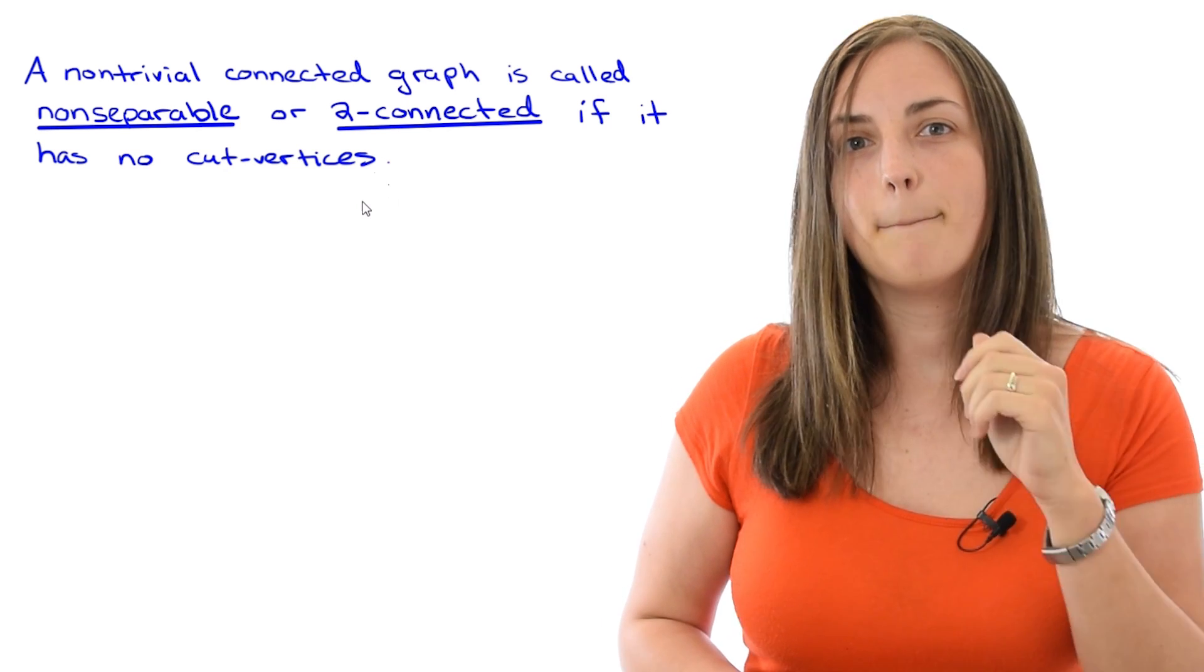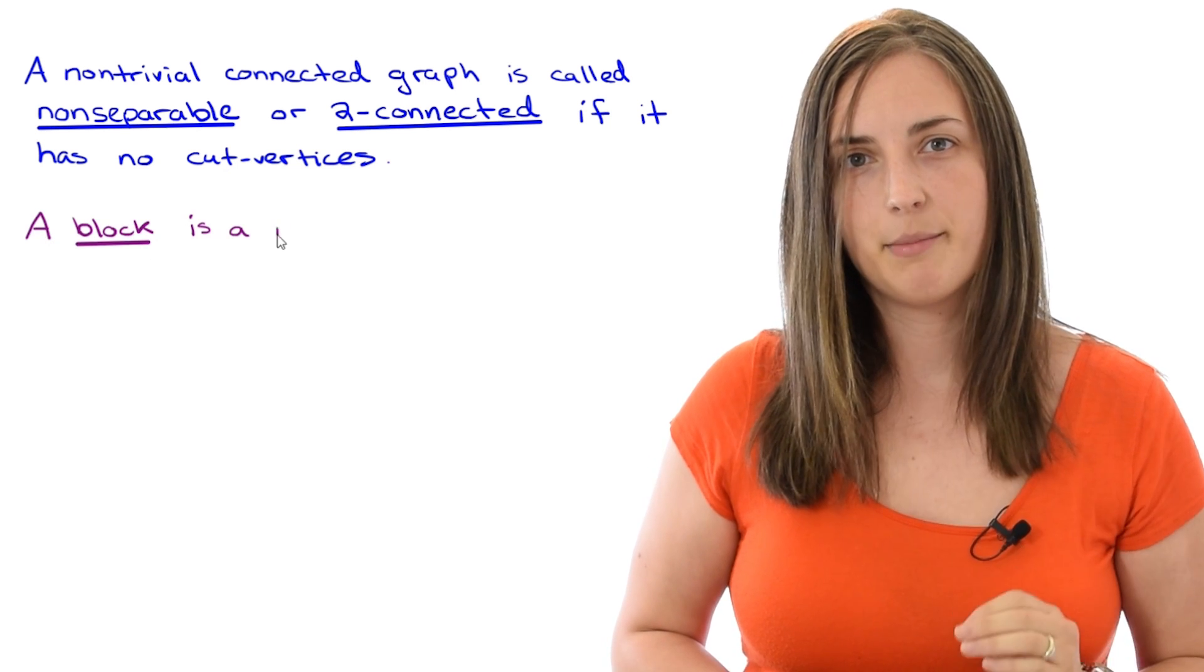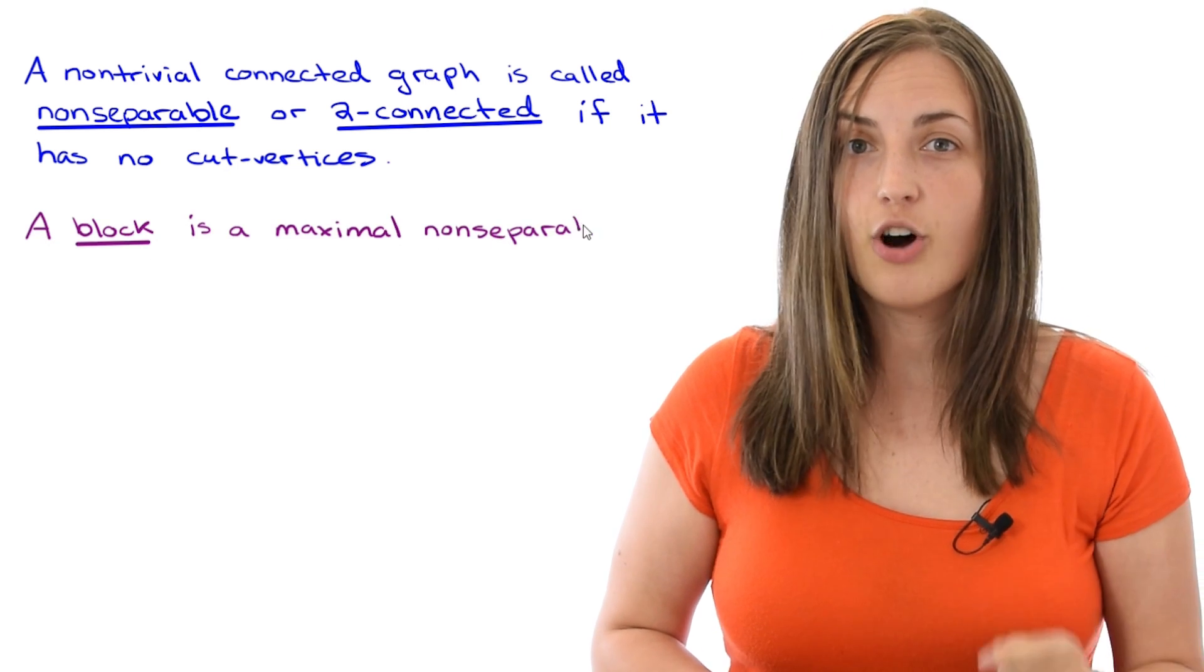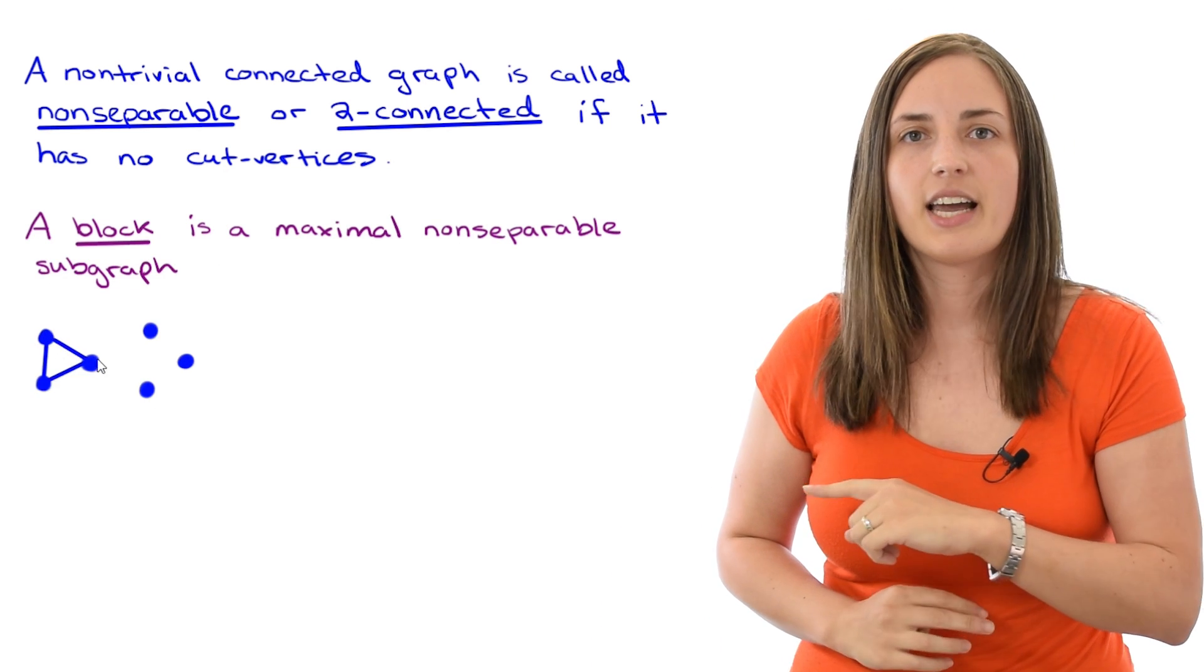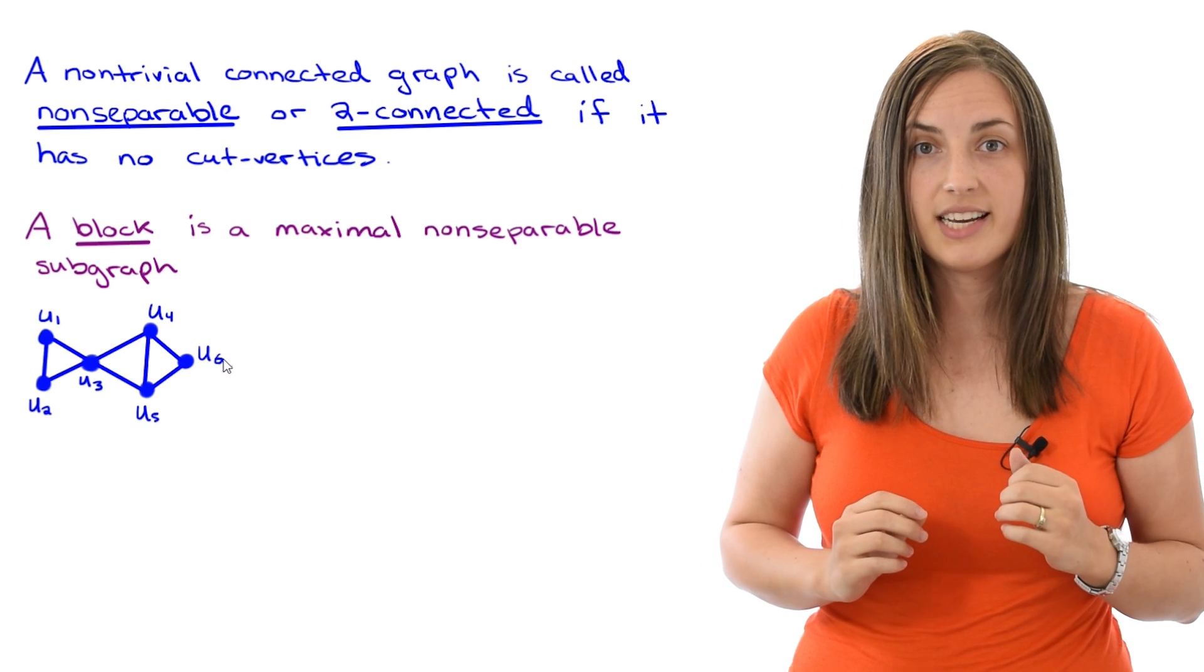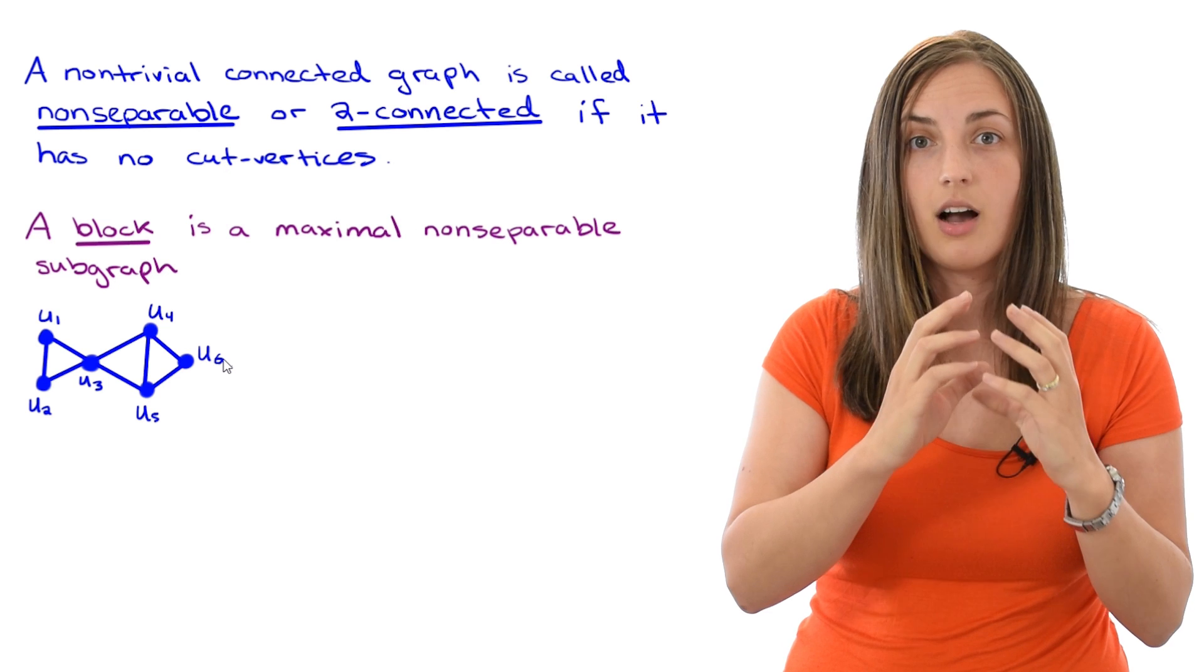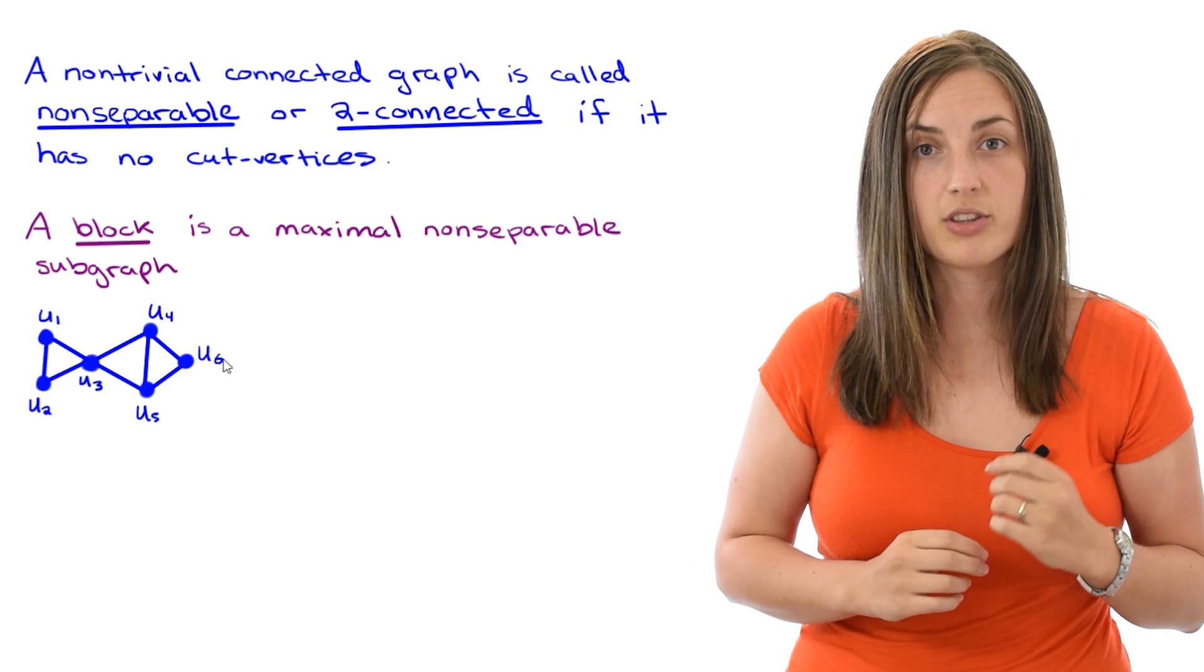So now that we've seen the definition of non-separable, let's take a look at the idea of a block in a graph. A block is simply defined to be a maximal non-separable subgraph. So to see what I mean, let's take a look at an example. So here I've drawn a graph and it does have a cut vertex. So we're going to take a look at the subgraphs of the graph, which are 2-connected or non-separable. Those are the blocks.